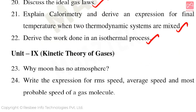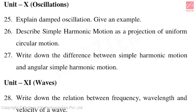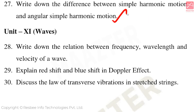Unit 9 Kinetic Theory of Gases — important three-mark questions: Why does the Moon have no atmosphere? Write the expression for RMS speed, average speed and most probable speed of a gas molecule. Unit 10 Oscillations: Explain damped oscillations with an example. Describe simple harmonic motion as a projection of uniform circular motion. Write down the differences between simple harmonic motion and angular simple harmonic motion. Unit 11 Waves: Write down the relation between frequency, wavelength and velocity of a wave. Explain redshift and blueshift in the Doppler effect. Discuss the law of transverse vibrations in stretched strings.